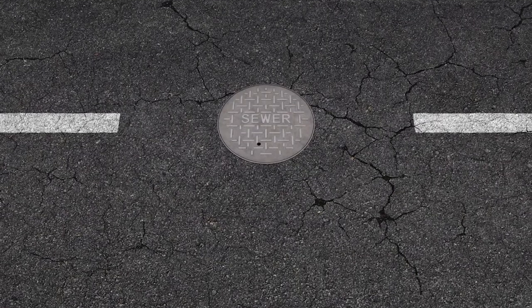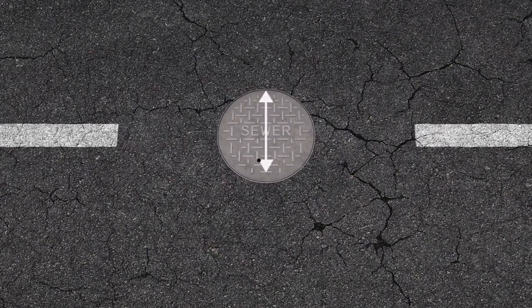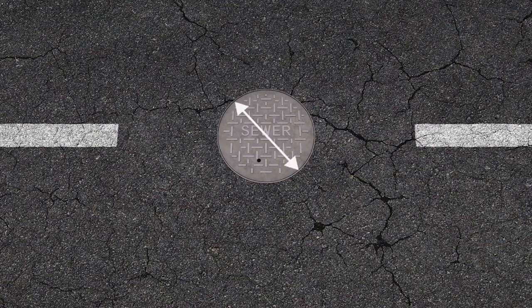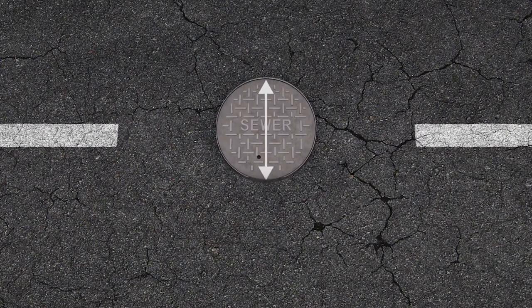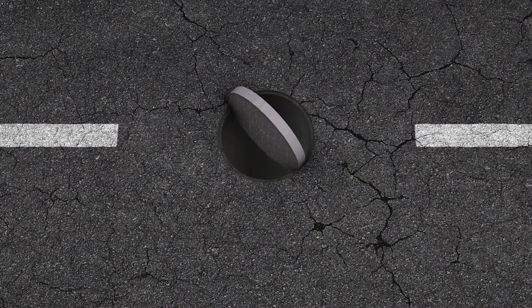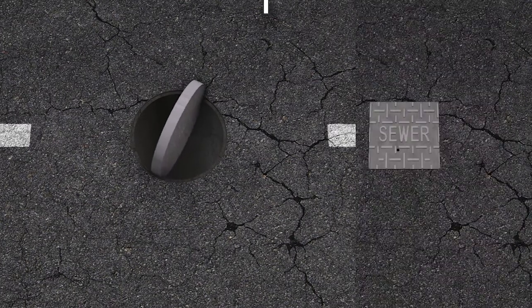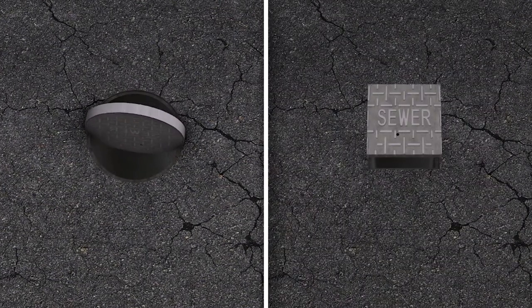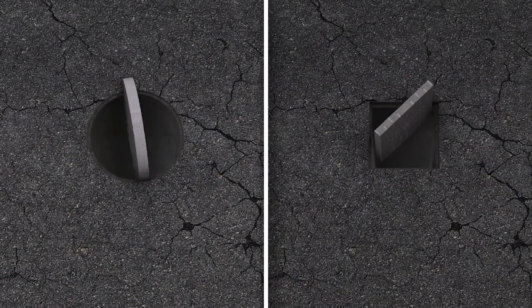One primary reason why manhole covers are round is that a circle is the same diameter all the way around, so it could never fall into the hole that it's covering. A square, on the other hand, if rotated diagonally, could easily fall right through.